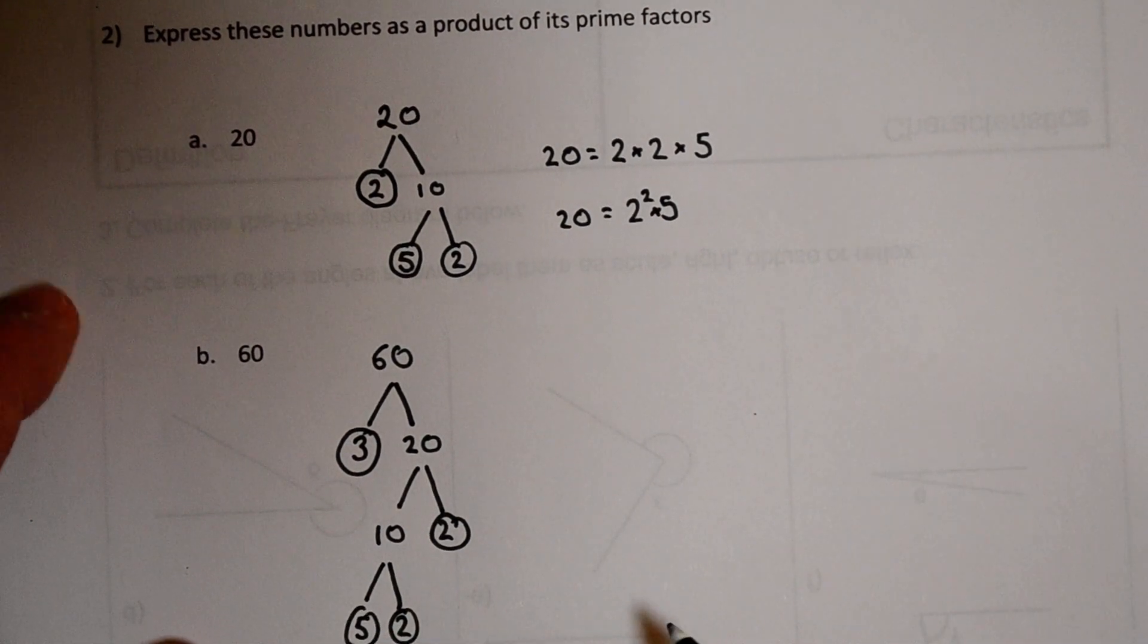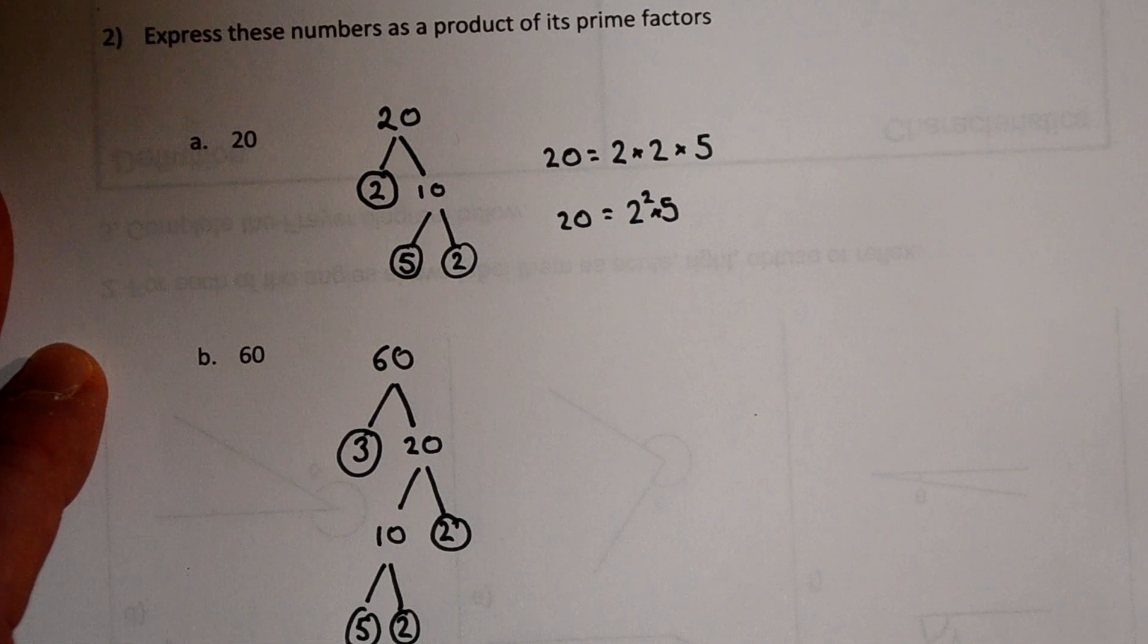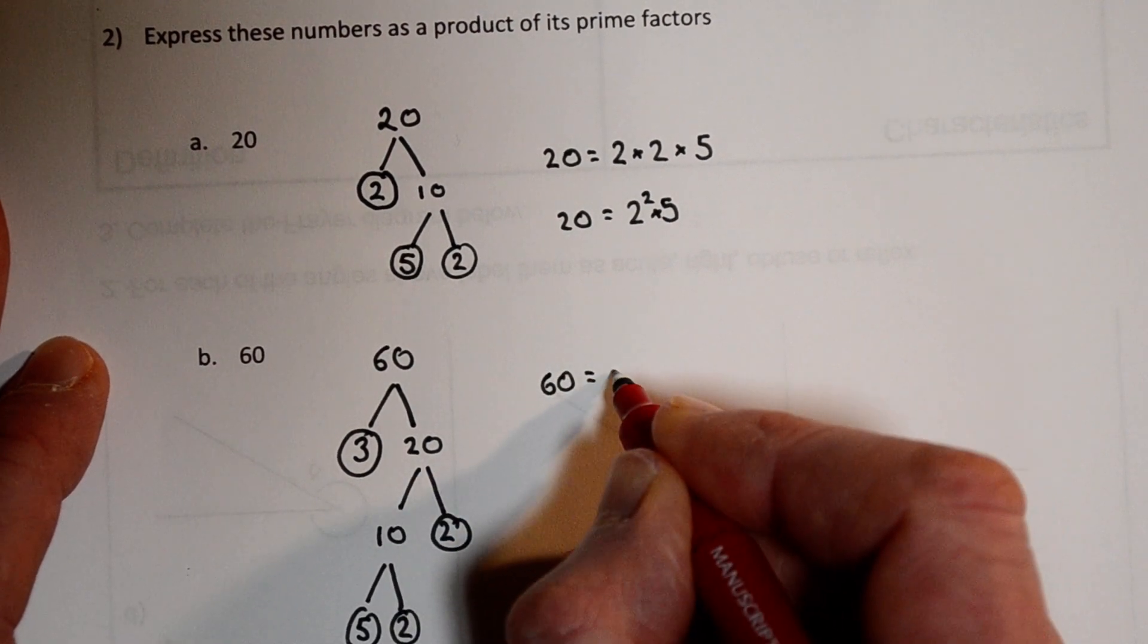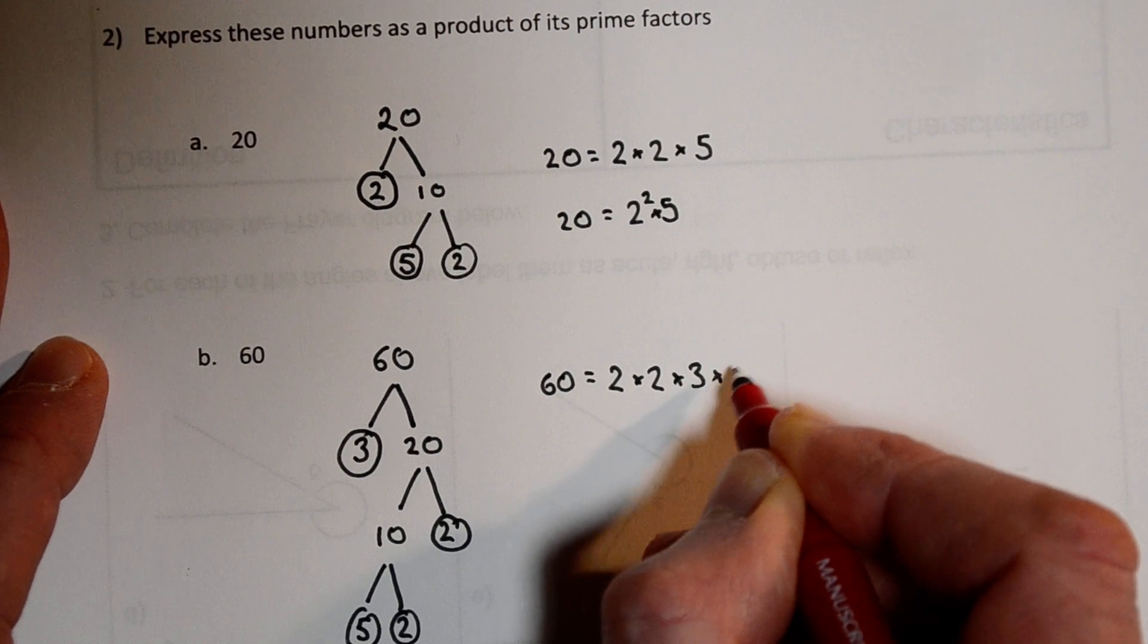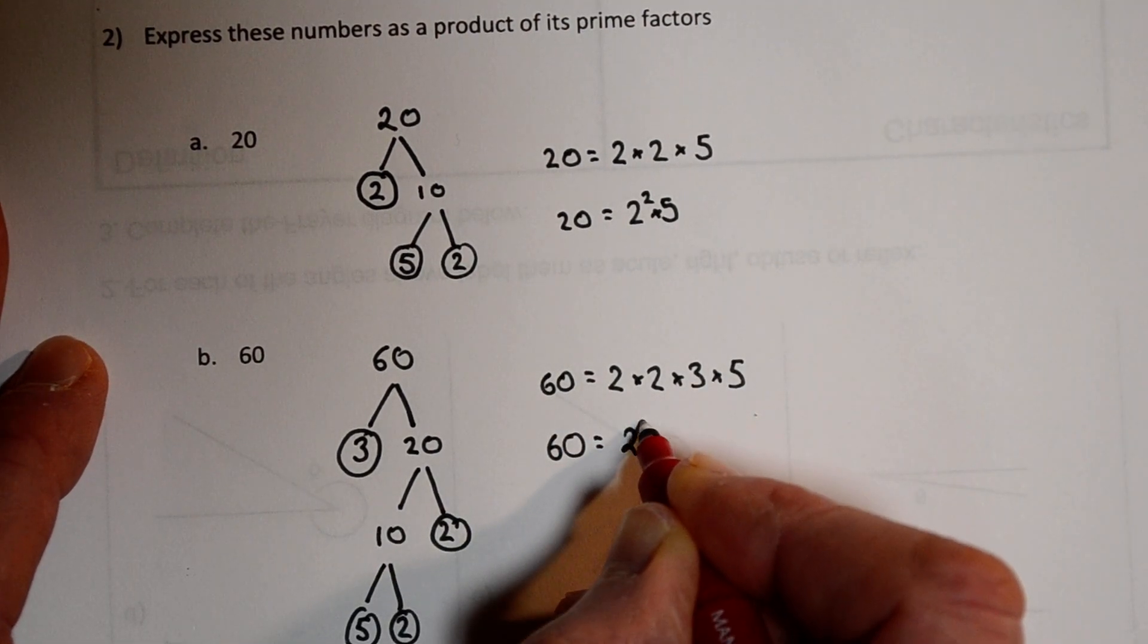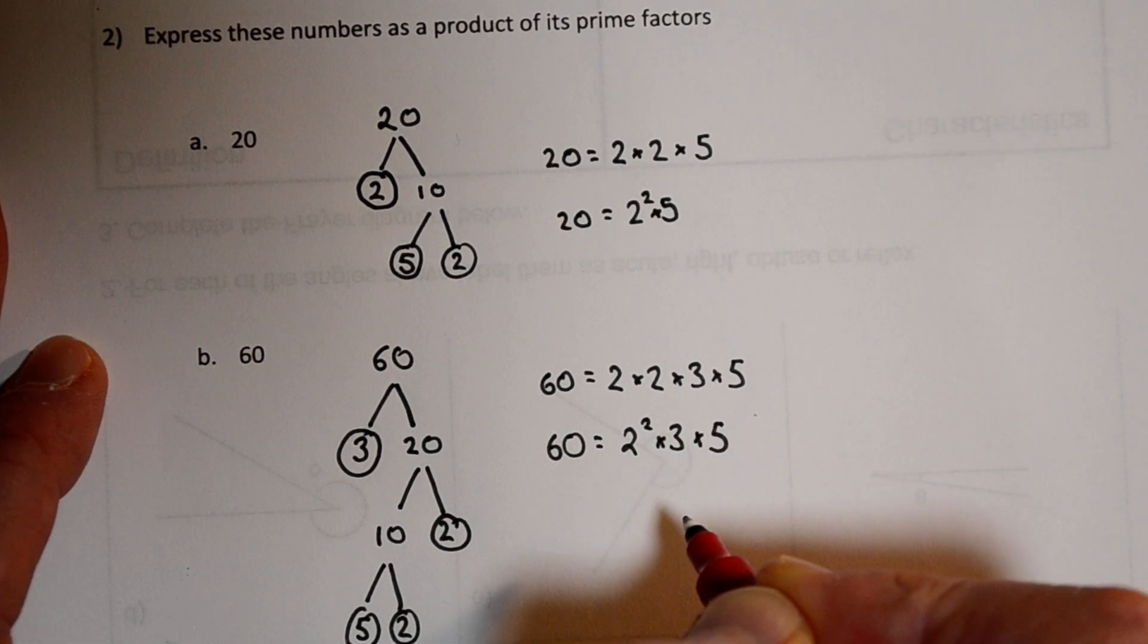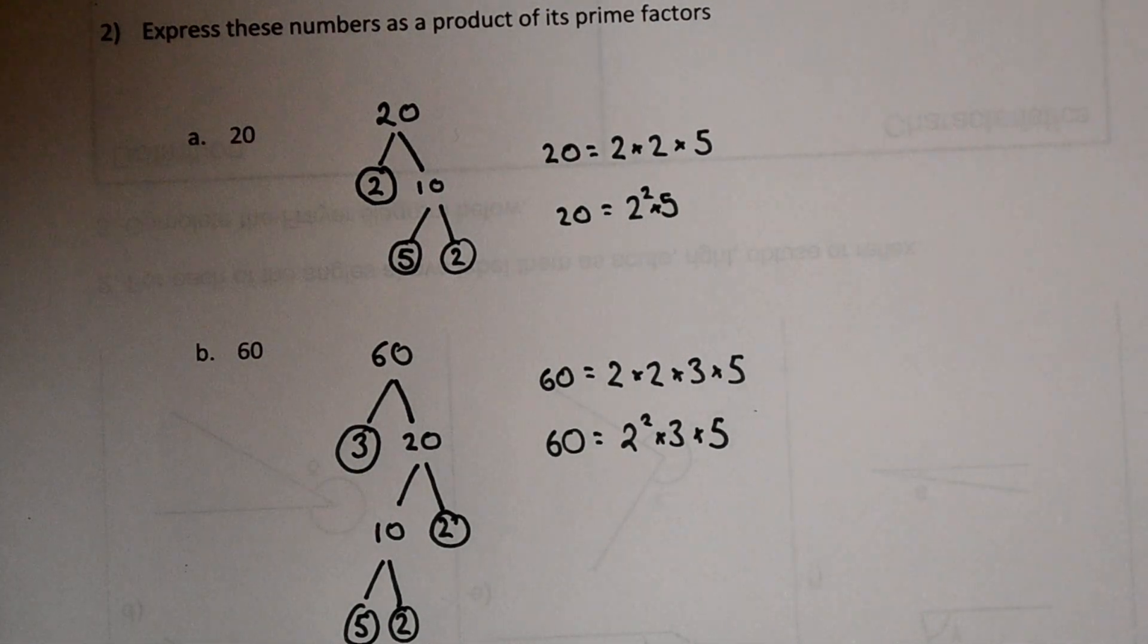Notice that as I've drawn the tree diagram I've not tried to do 1 times anything because that won't help us at all. That will just keep us with the same number. So we've got our primes so we can say 60 equals, or using index notation 2² × 3 × 5, and there we've written two numbers as a product of their prime factors.